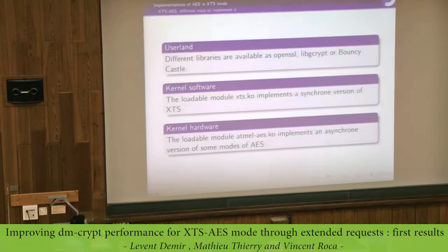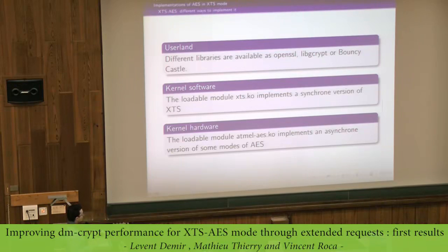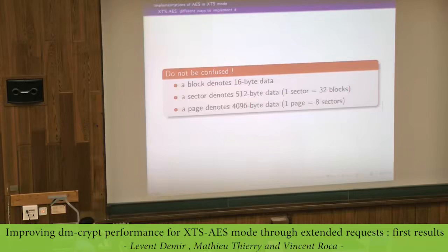Now we will see the implementation. As a recall, there are three levels for encryption: user land, with many libraries; inside the kernel in software, with a module such as a software implementation of XTS; and kernel hardware. Inside our Atmel module, we have a crypto engine and we need to encrypt using this specific Atmel hardware module. It is important to clarify terminology: a block is 16 bytes of data; a sector is 512 bytes, the same as in Linux, and one sector is 32 blocks. A page is four kilobytes of data, and a page is eight sectors.